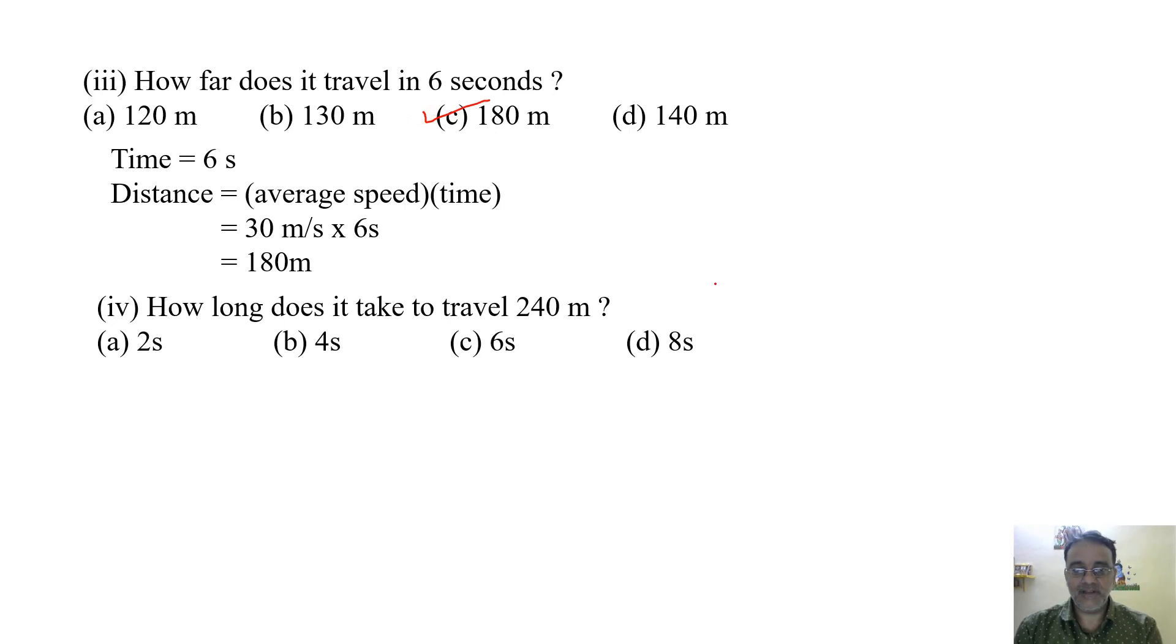Now we will move toward the fourth one. How long does it take to travel 240 meters? Now distance is given and we need to find time. The formula of time is distance upon speed, right? So 240 upon speed. Speed is 30 meters per second, so 240 upon 30, we will get 8 seconds. So the correct option is D.